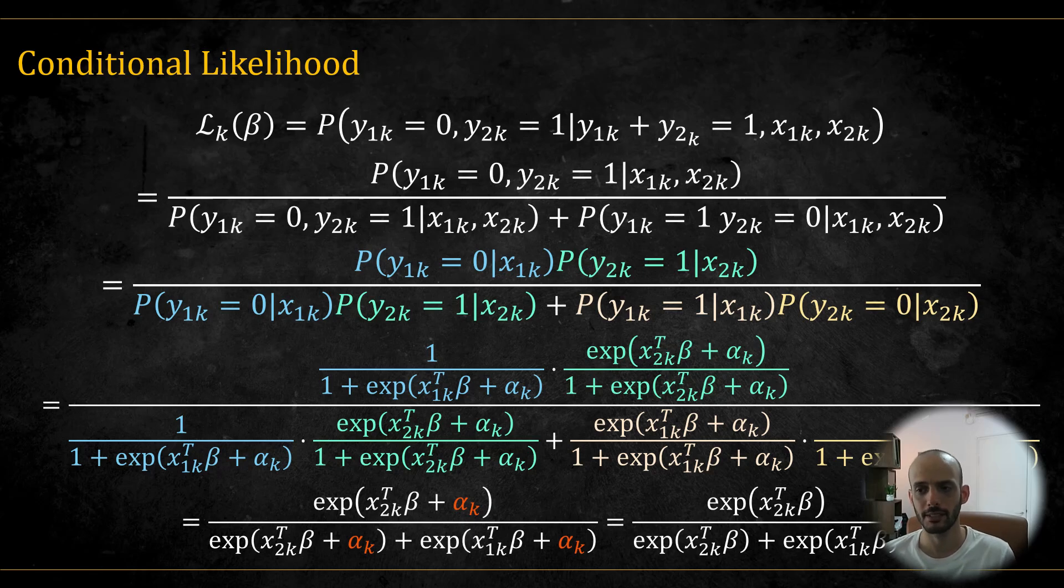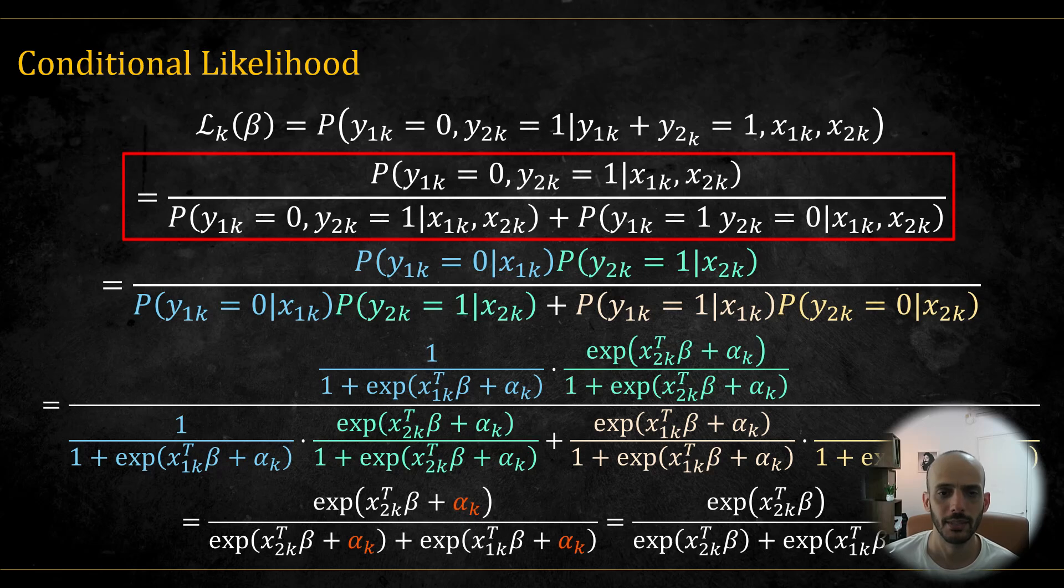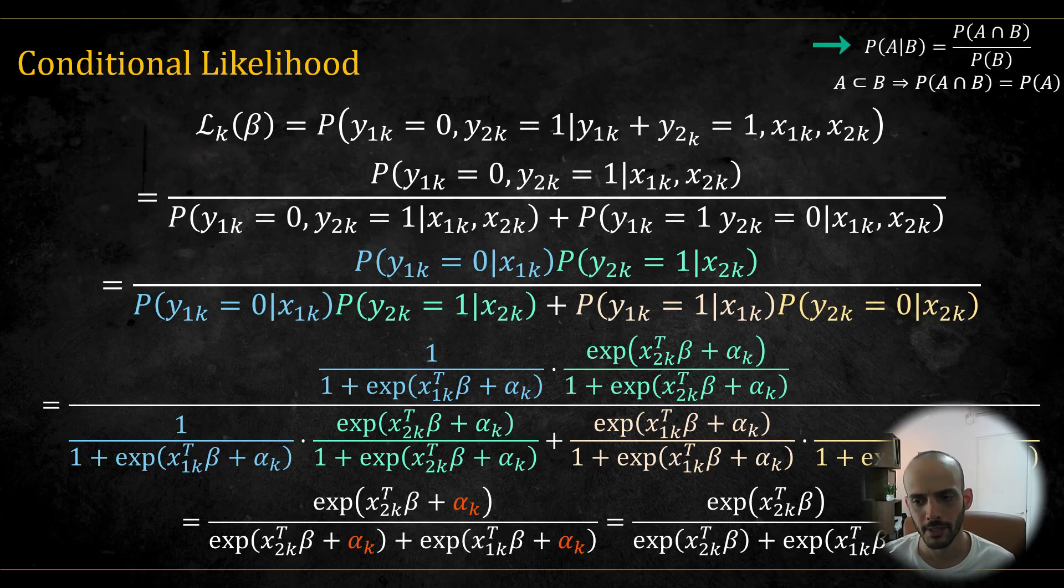Going from the strata level probability, we use conditional probability to get this expression. How did we get this? Well, the law of conditional probability is this, but in our case, a is the subset of b, so the numerator is just p of a and the denominator is p of b.